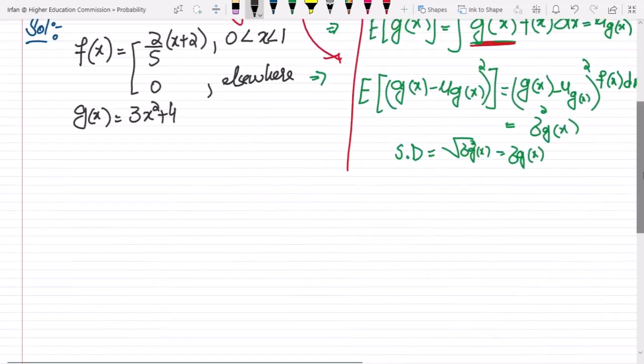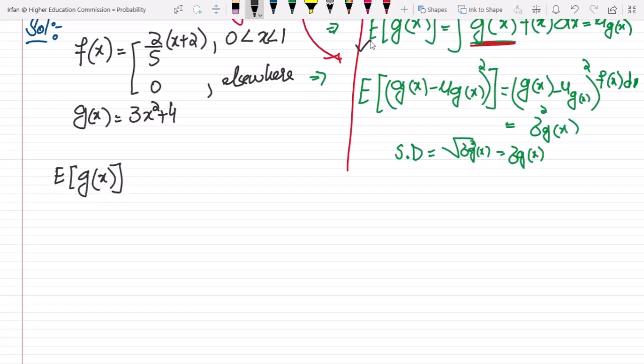First of all, we have to find the expected value. The expected value would be e of g of x, which would be the integral from 0 to 1 of g of x times f of x dx.